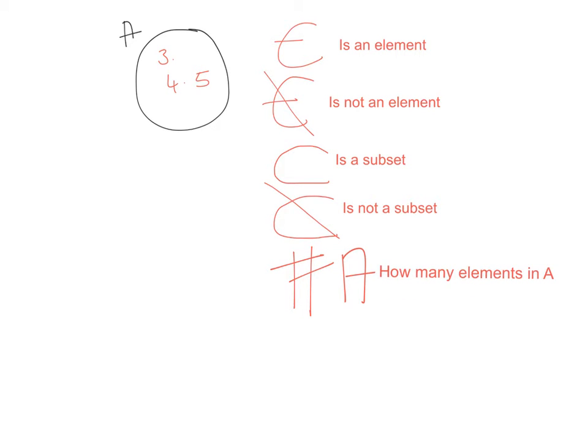We then looked at if a set was empty, how would we use notation to describe that. And we said that we would use this symbol here or this symbol here, the empty brackets, and that stood for the null set. And it basically means when a set is empty.